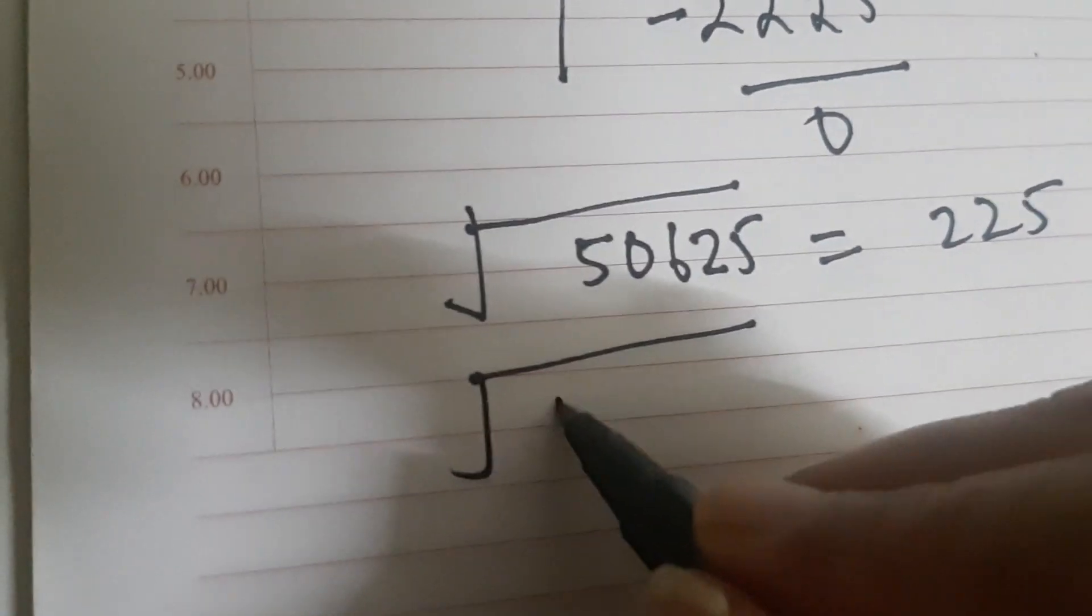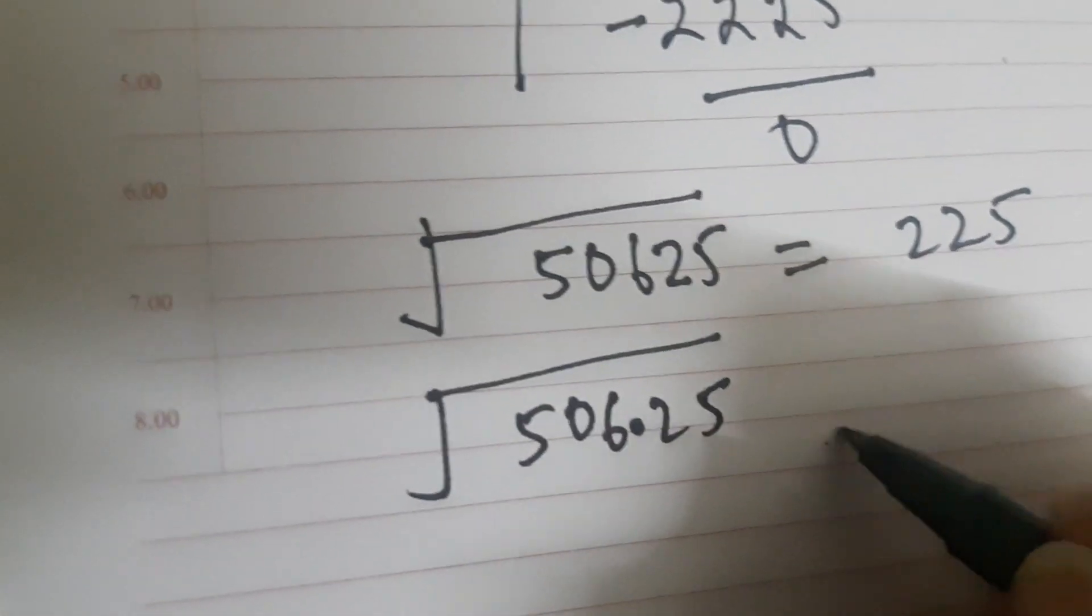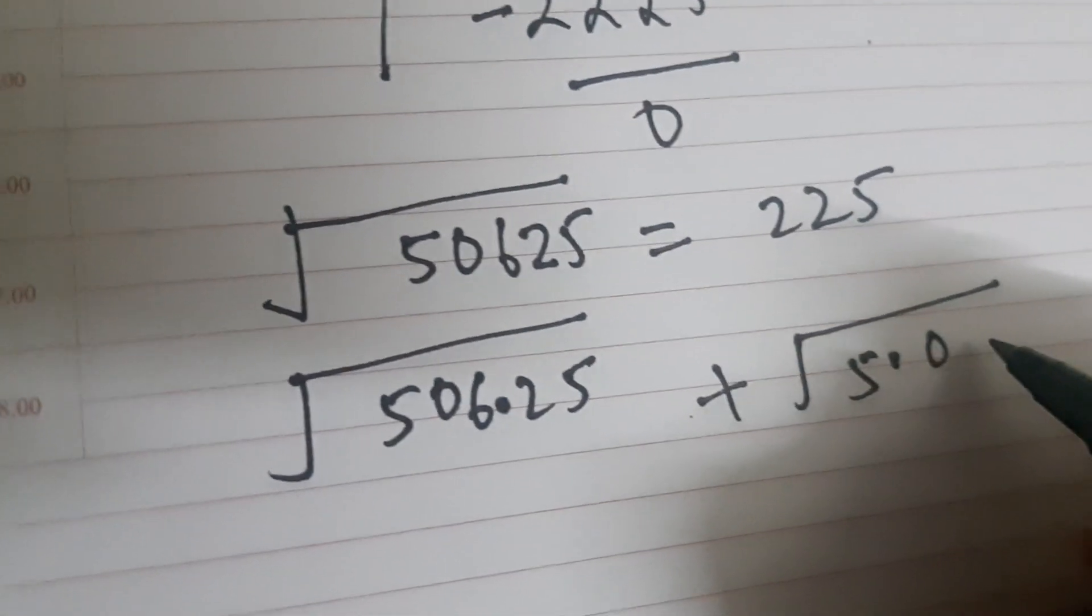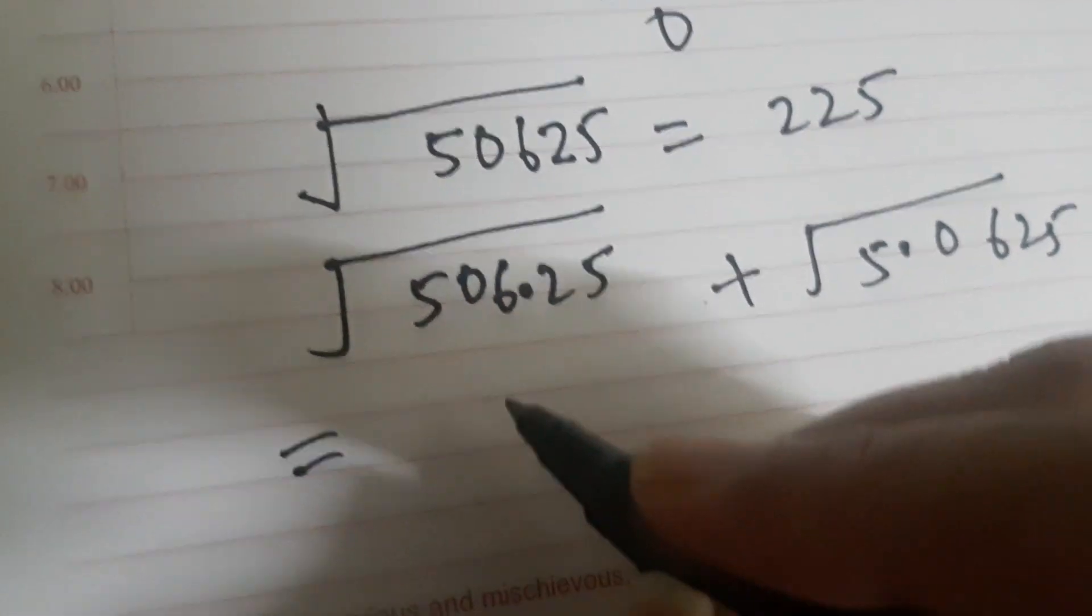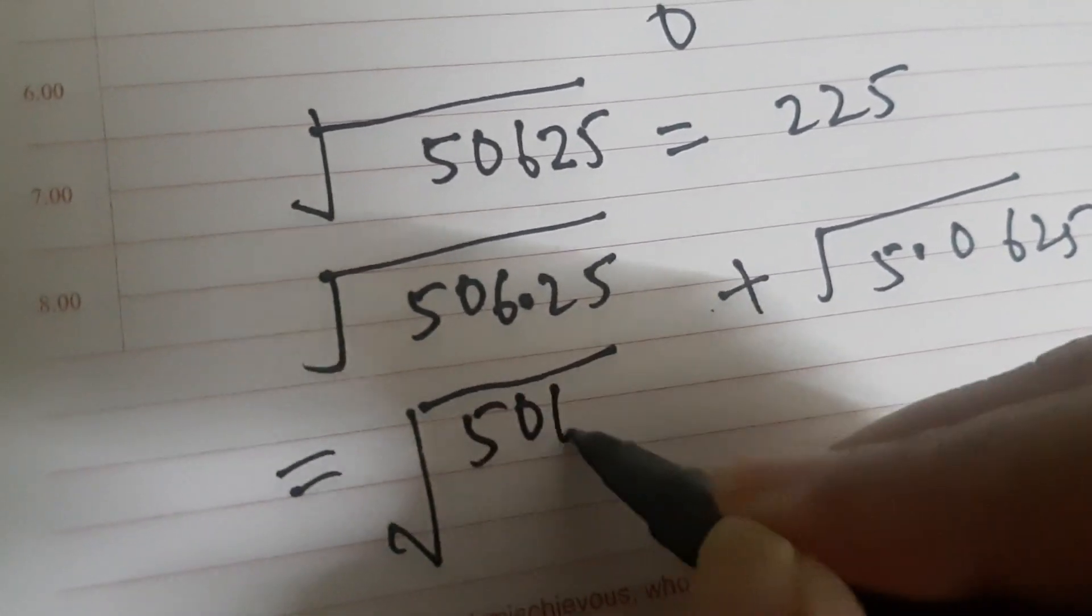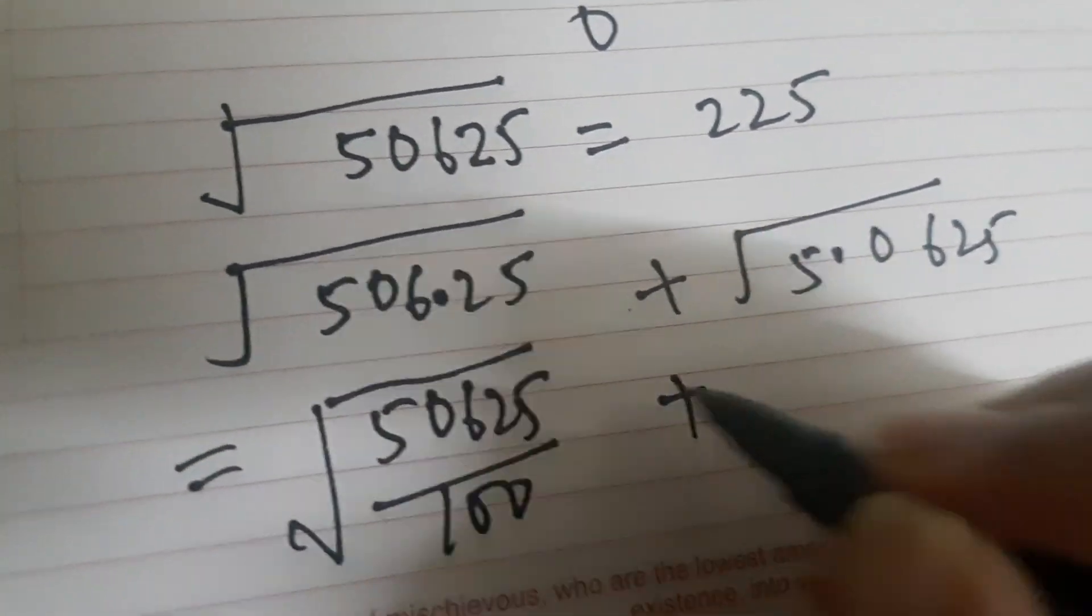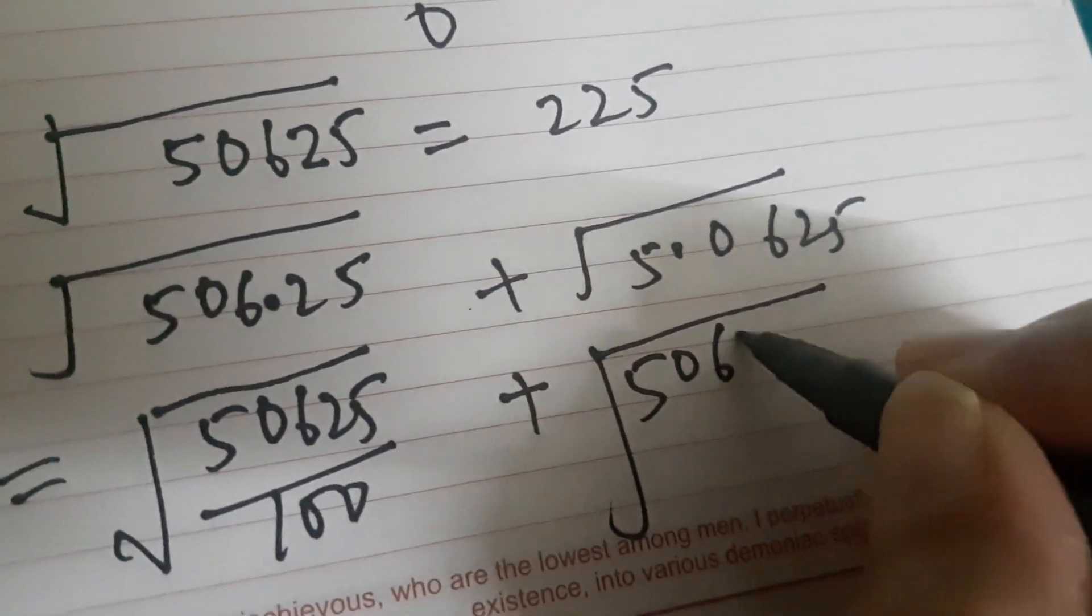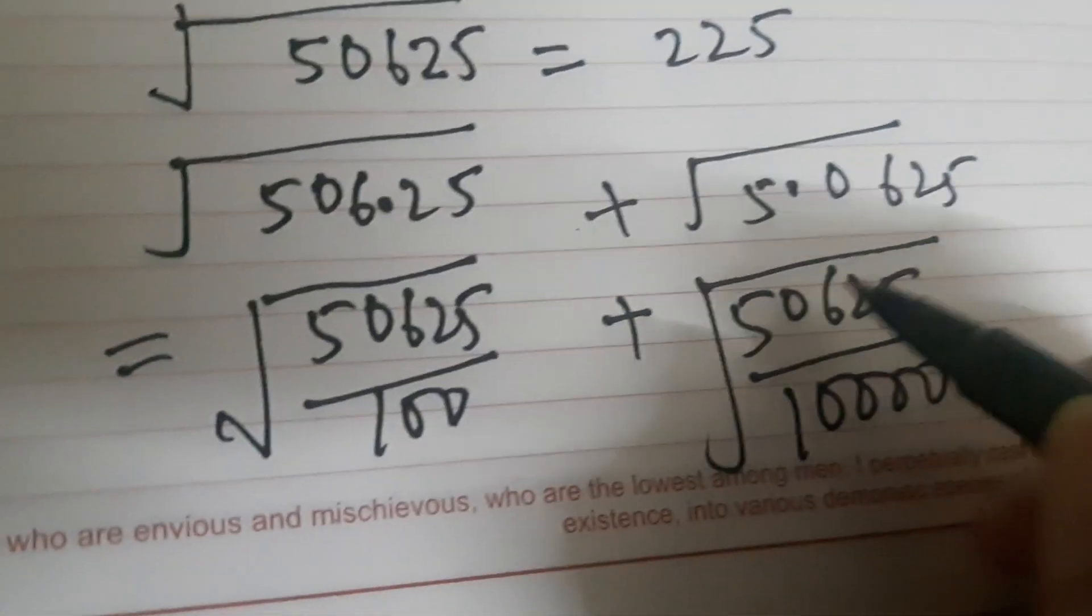Now in this question using this value, I have to find the value of square root of 506.25 plus square root of 5.0625. So I can write it as square root of 50625 divided by 100 plus 50625 divided by 10,000. You know I am removing the decimal and writing the digits like this.